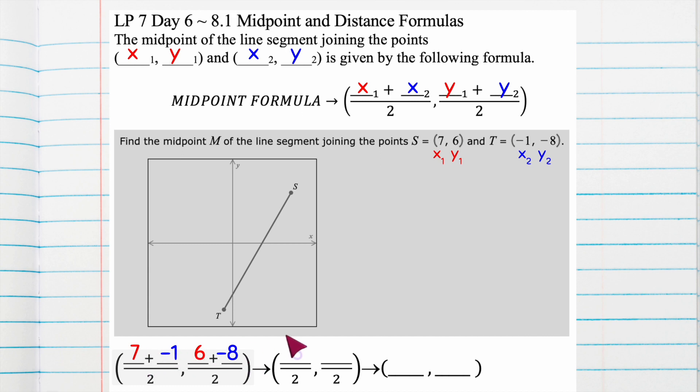So now seven minus one is six, sorry, six minus eight is negative two. Now you do have to reduce these because six divided by two is three, and negative two divided by two is negative one.